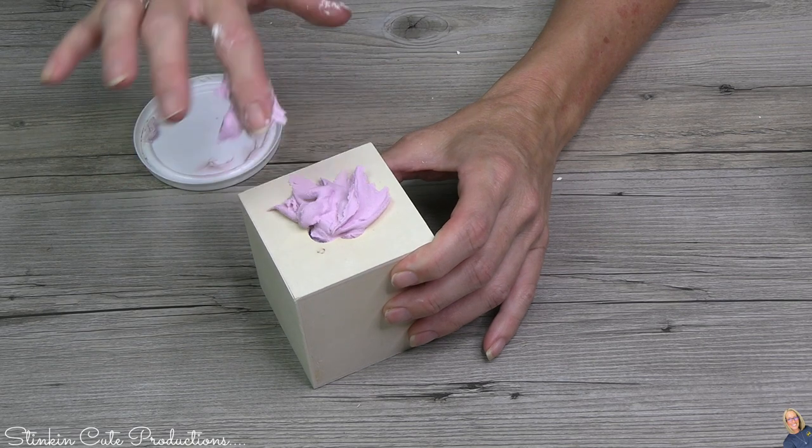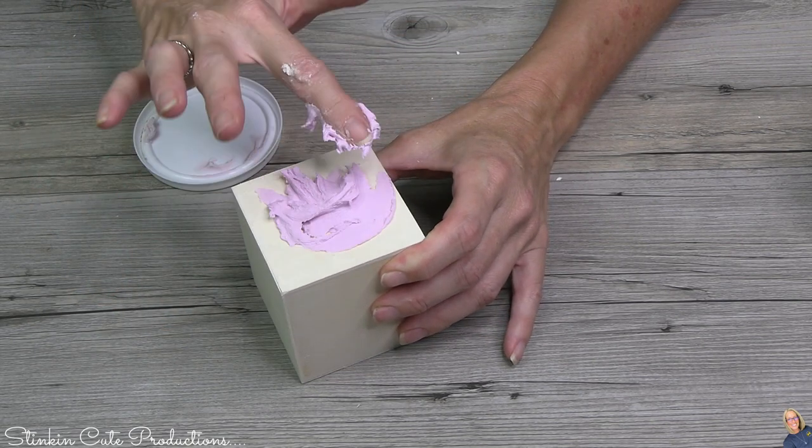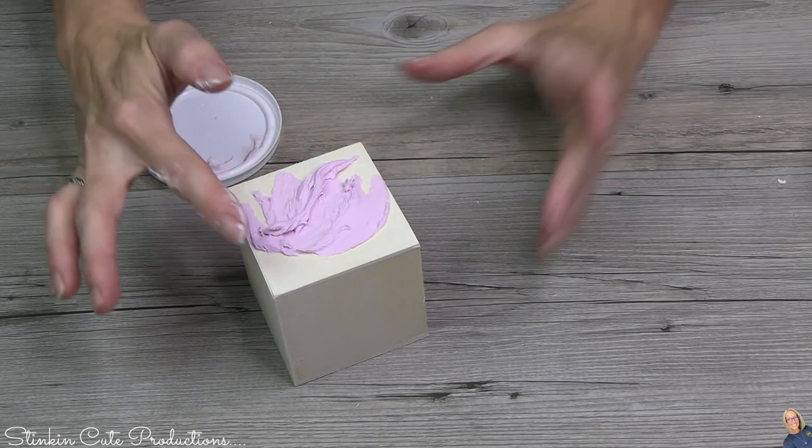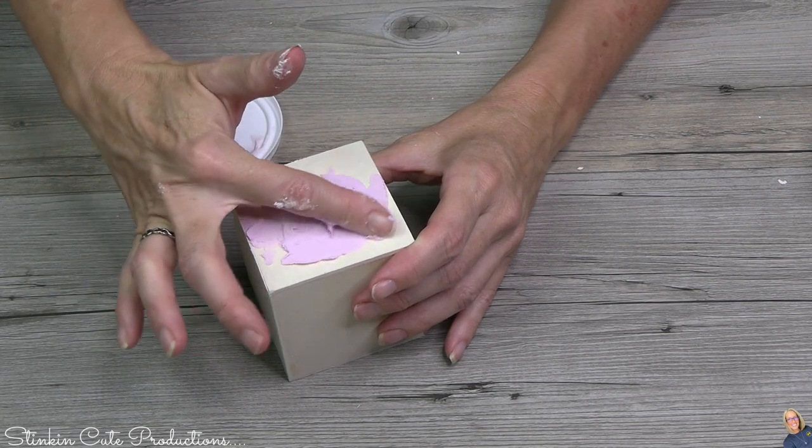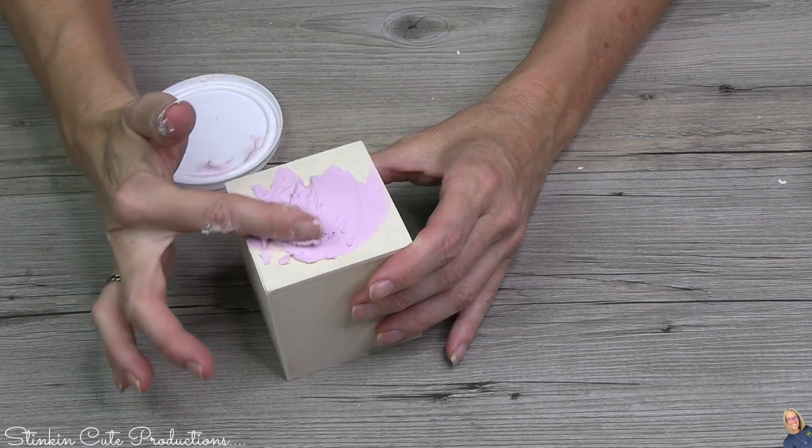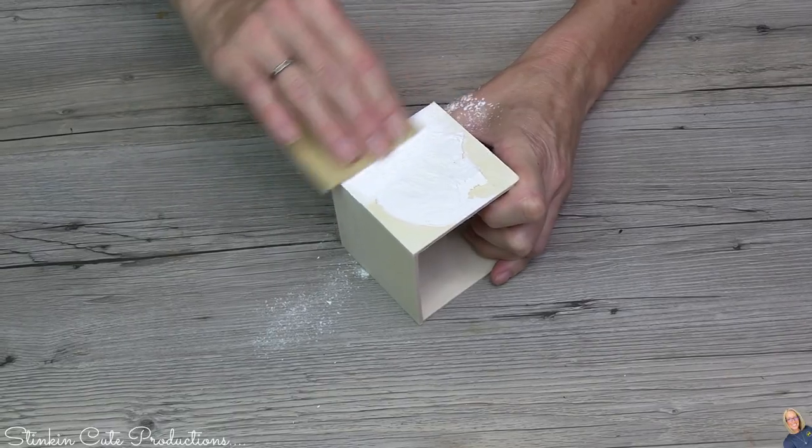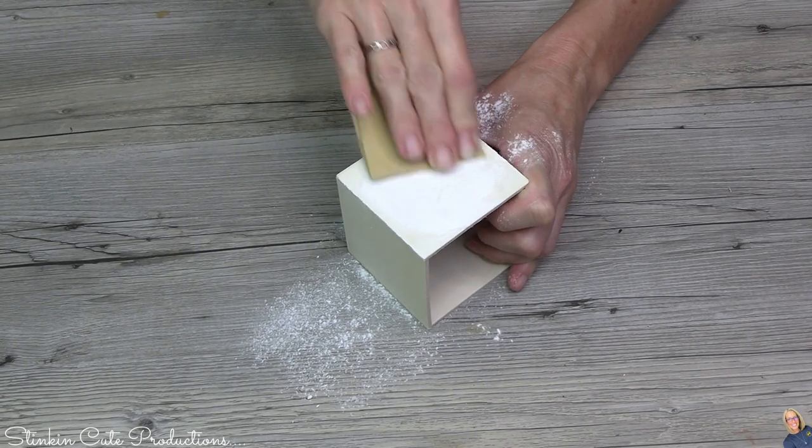Typically, Dollar Tree does have a spackling, but I have not been able to find it lately. So if you head on over to Walmart, you can get some of this cool spackling that actually goes on pink and once it's dry, it's white. I feel like this one dries a bit quicker than the one at Dollar Tree. Once it's good and dry, you are good to go. Take some sandpaper and smooth it out.